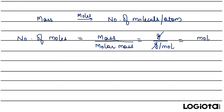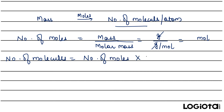Now after finding the number of moles, you need to calculate number of molecules. To calculate number of molecules, that is equal to number of moles multiplied by Avogadro's number, which we denote as N₀ and its value is 6.02 × 10²³. This is the formula to calculate the number of molecules.